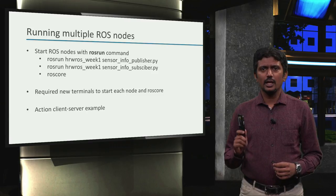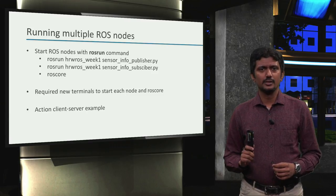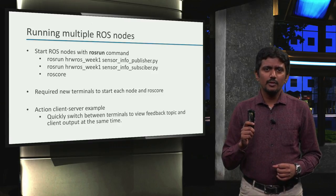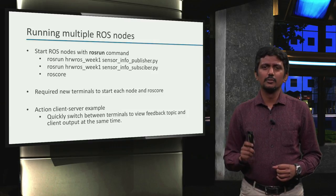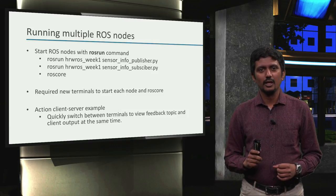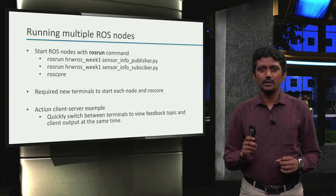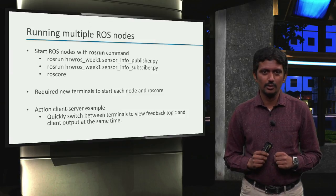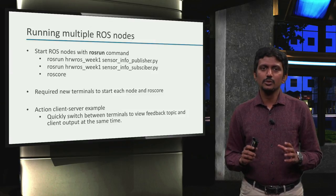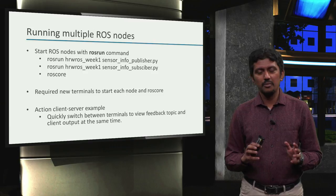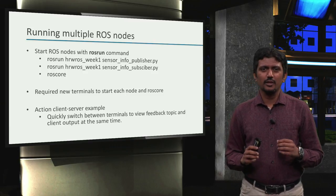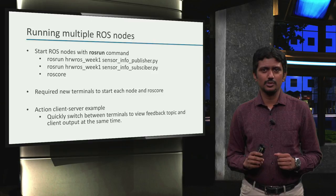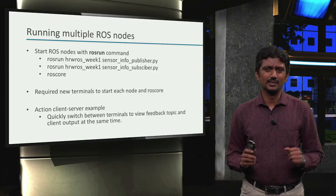Particularly in the action-client-server example, we had to quickly switch between terminals to view the feedback topic and the client output while the server was still processing the goal. Well, doing this with two nodes is probably ok, but when we have to juggle around terminals when 20-30 ROS nodes are running, it can become quite a circus.